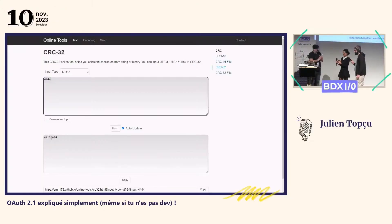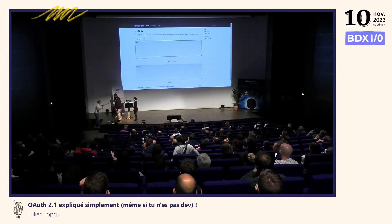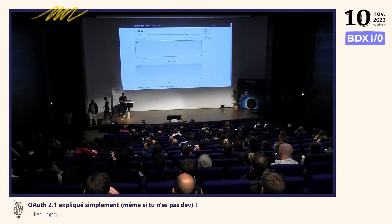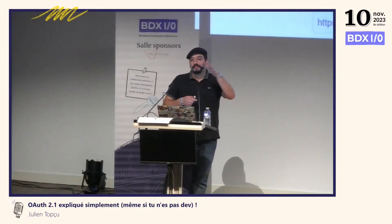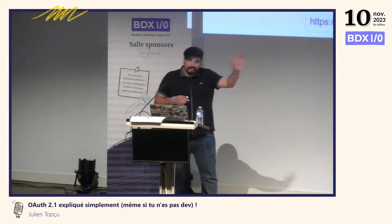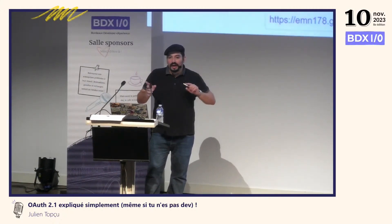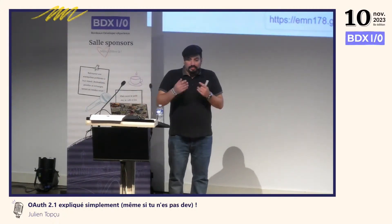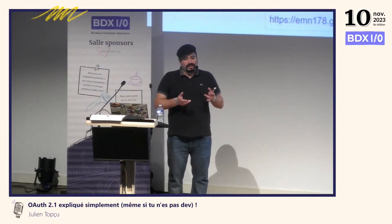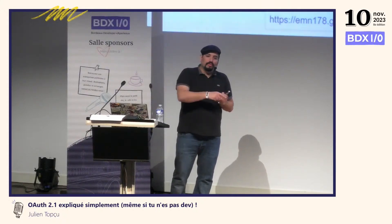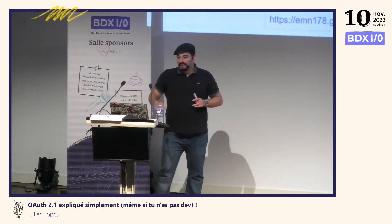Merci pour votre participation. En fait, peut-être que c'est un mécanisme que vous connaissez un peu, notamment si vous avez déjà fait des commandes sur des sites comme Amazon. Des fois, ils vous fournissent un code et ils vous disent surtout de ne pas le communiquer par mail — vous le donnez de visu au livreur, parce que ça lui permet de savoir que vous êtes la bonne personne à qui remettre le colis. Ce numéro, le livreur ne le connaît pas à l'avance, il a une appli, il le rentre. C'est le même mécanisme.